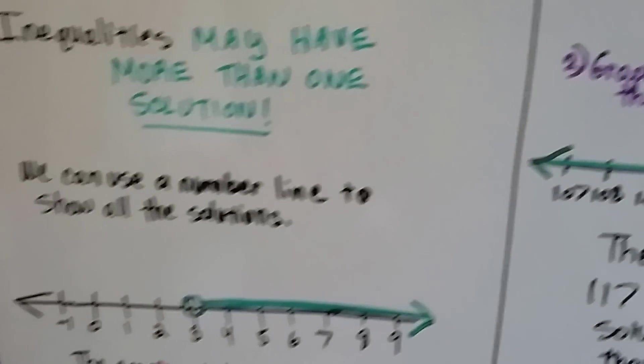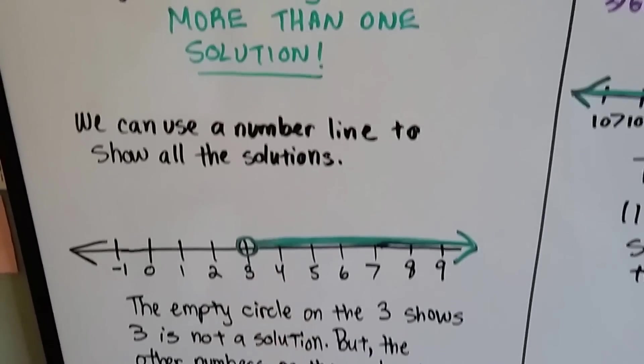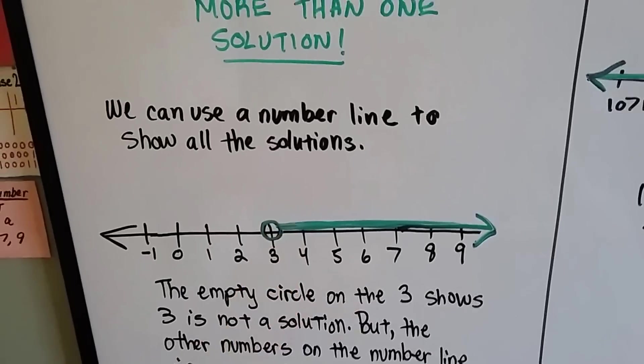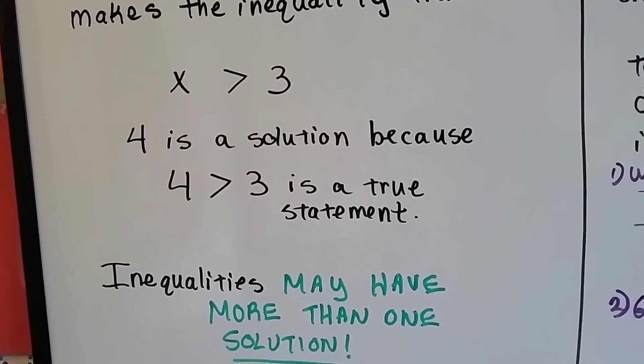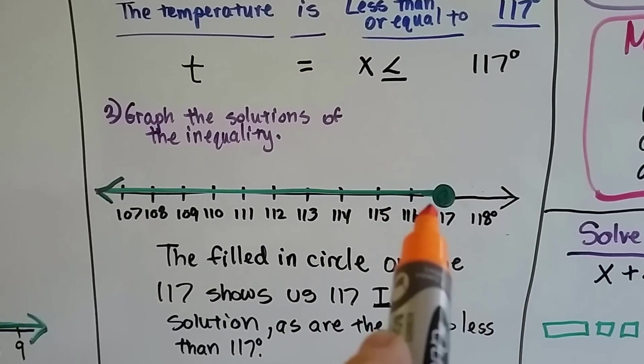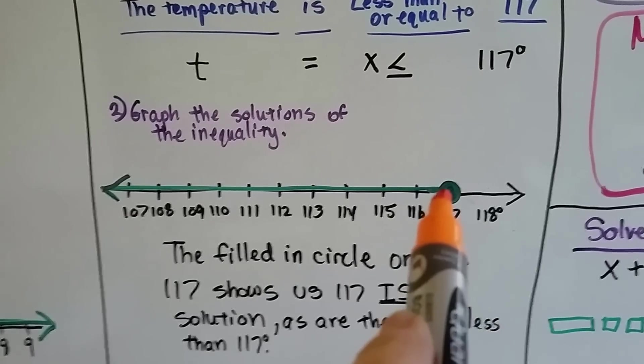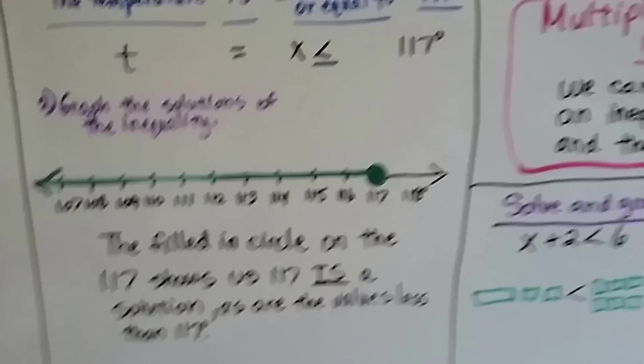Now on this one, because 3 was not part of the answer, we left it open. The empty circle showed it's not part of the solution because 3 is not greater than 3. So on this one, it did reach 117 degrees, but not any higher. So 117 is included by filling in the circle.